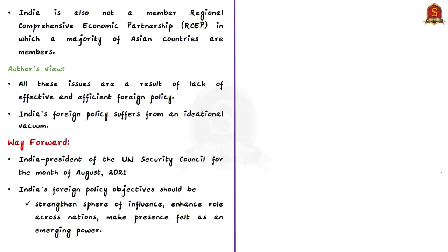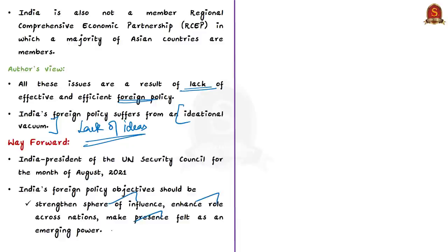The author feels all these issues are due to lack of effective and efficient foreign policy. He tells that India's foreign policy suffers from an ideational vacuum — meaning Indian foreign policy makers lack firm ideas. The author prescribes that India's foreign policy objectives should be strengthened to widen its sphere of influence, enhance its role across nations, and make its presence felt as an emerging power in an increasingly disruptive global system. This should be done with serious efforts since India will serve as the president of the UN Security Council for the month of August 2021. The author tells India should use this as a leeway to change its relations with neighbours and other countries.